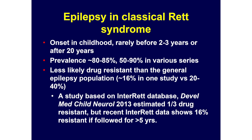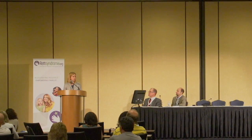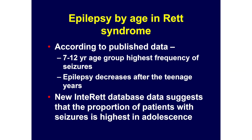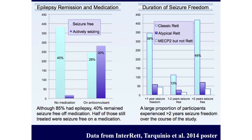Epilepsy in classical Rett syndrome is possibly less likely to be drug resistant than the broader epilepsy population — maybe around 16 percent versus 20 to 40 percent overall. The 7 to 12 year group has the highest frequency of seizures, then epilepsy decreases after the teenage years in severity. Looking at epilepsy remission rates: about 85% of patients had epilepsy. Of those, 40% remained seizure-free off medications. Of those on medications, about half were seizure-free, and the other half were still having seizures.